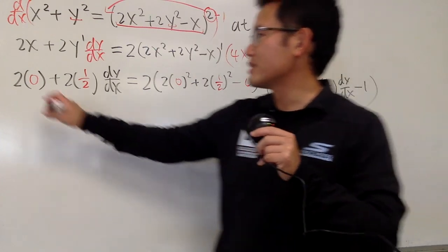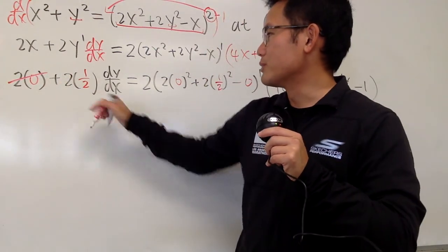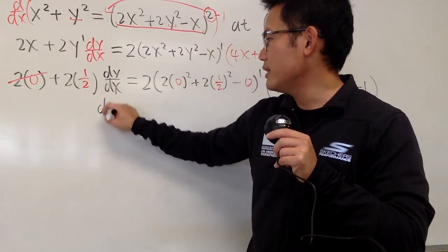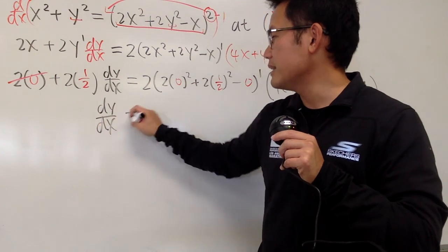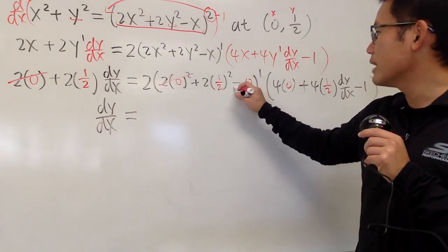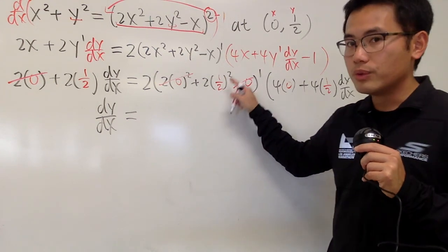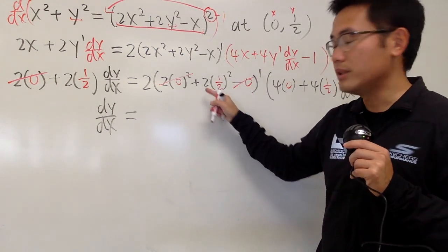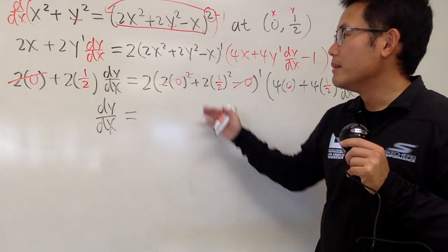So, let's clean things up. Of course, 2 times 0 is 0, and 2 times 1 half, this is the one. So, that's dy dx right here on the left-hand side. Well, for this quantity, you see that this is 0, that's 0. 1 over 2, square is 1 over 4, times 2 is going to be 1 over 2, right?